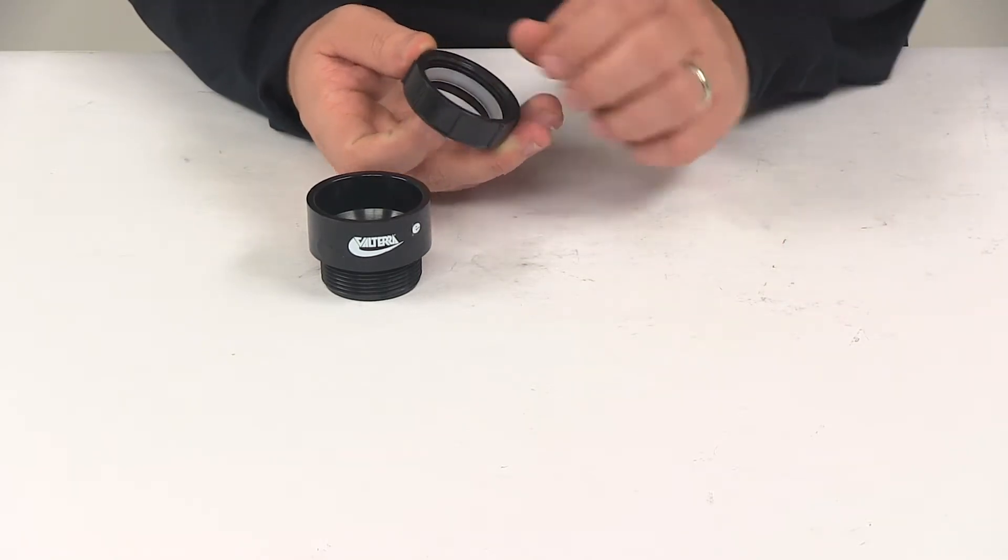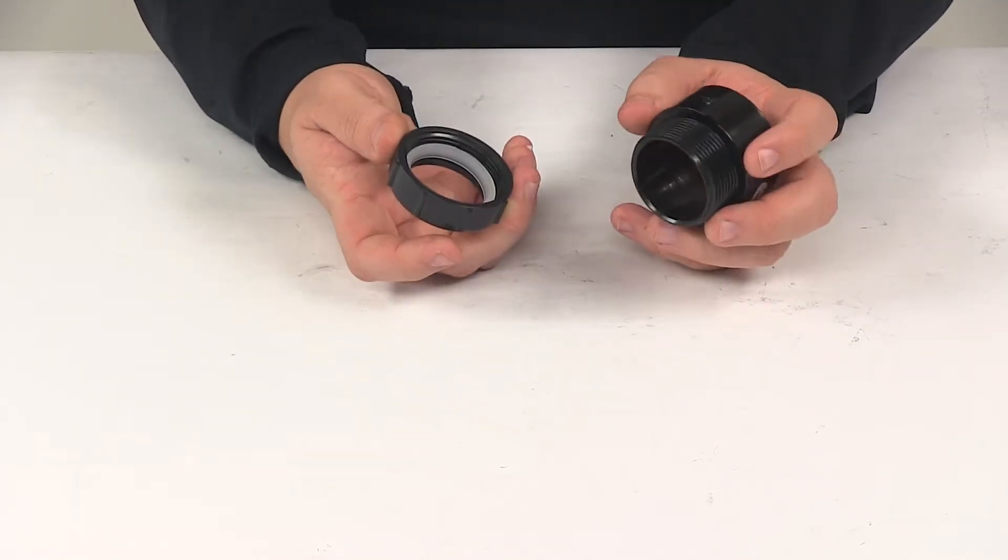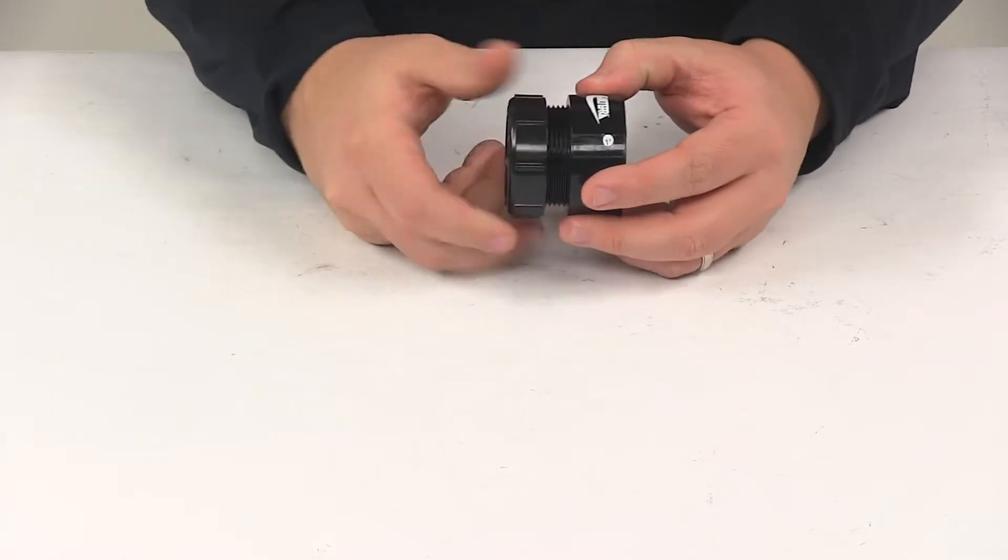Next, the ferrule goes over, same way the nut did, and then this slides onto the pipe, and then all these components work together.